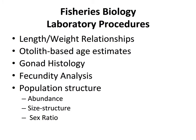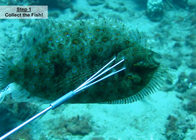Here's a list of laboratory procedures we do on fishery species. We want to find out the relationship between length and weight, estimate age using otoliths, and examine gonads to determine maturity, spawning seasonality, and fecundity — how many eggs they produce. Finally, to institute good fisheries management strategies we need to know about population structure: how many fish are there, what is their size structure, are there more big fish than small, what is their sex ratio, and what is their mortality rate.